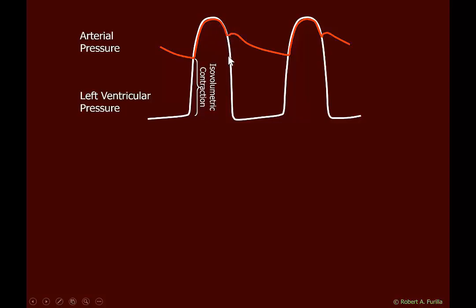Now we go through isovolumetric relaxation — no blood is moving. Pressure drops as the heart relaxes until the pressure falls low enough to allow the venous pressure feeding the atria to push the mitral valves open, and we see the filling of the ventricles once again. In the aortic pressure, we see the diastolic period averaging about 80 mmHg; the valve pushes open and then closes. This peak is our systolic pressure, giving us both diastolic and systolic pressure values.